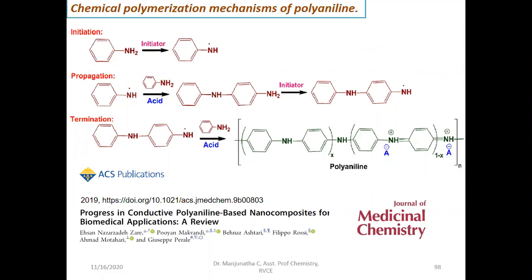In the propagation step, the anilinium free radical in acidic medium undergoes substitution at the para position of a fresh aniline molecule, forming a bond and producing a neutral dimer. That dimer again reacts with the initiator APS and forms another free radical. That free radical again reacts at the para position of fresh aniline. Like that, the initiation and propagation keep on happening, leading to the formation of polyaniline. Finally, you get a green color polyaniline in acidic medium.